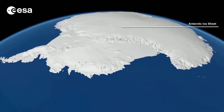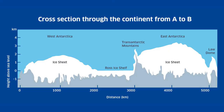Ice shelves extend off the coast of Antarctica today and are more than half a mile in thickness in some places. Today, ice sheets are only found in Antarctica and Greenland. At its thickest, the Antarctic ice sheet is three miles thick.